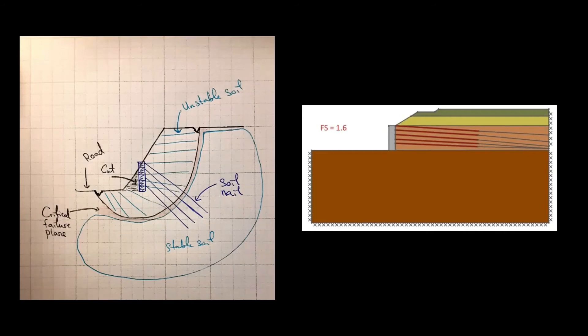After these nails are put in place, there is a steel cage put up and then shotcrete is sprayed on top of it to reinforce and build a wall.